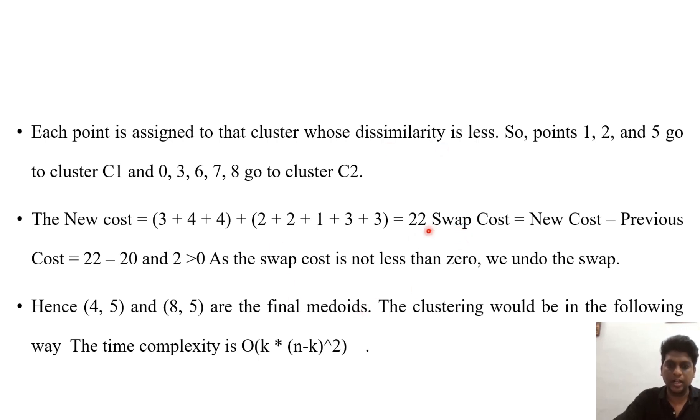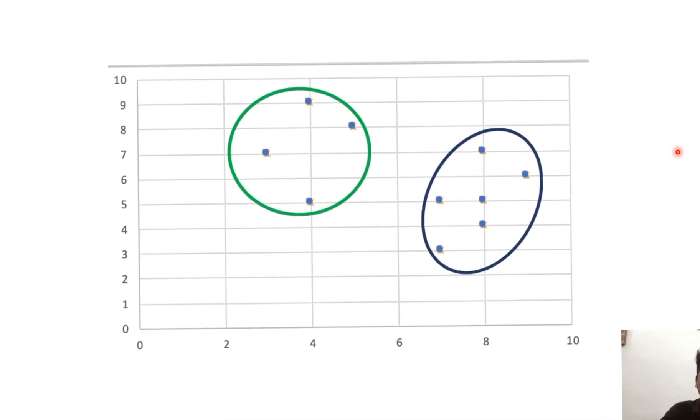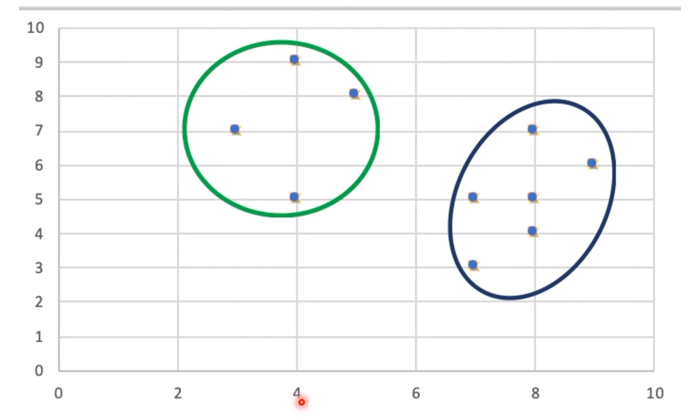So the previous one is 20. Now the new cost is somewhat greater than this new cost value. So we have to finalize the previous one is the best. So 4,5 and 8,5 are the final Medoids. So the time complexity of this algorithm is given as follows. Plot the graph and the cluster is formed.